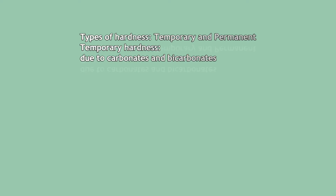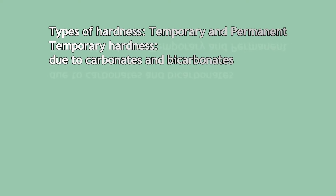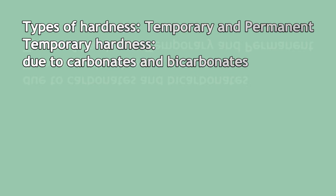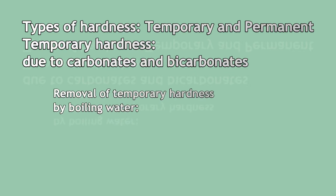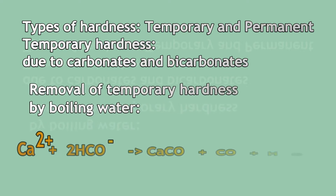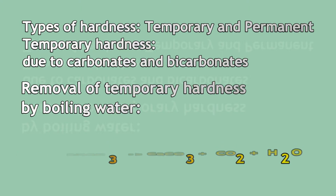There are two types of hardness: temporary and permanent. Temporary hardness is due to carbonates and bicarbonates. It can be eliminated by boiling water, as there is the formation of insoluble carbonate that can be separated from water in the decantation process.